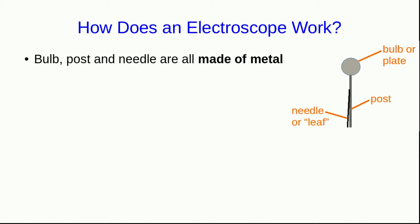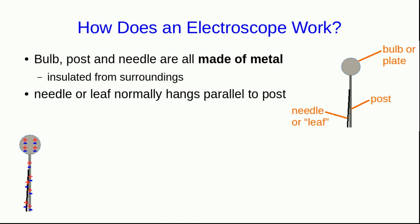All these parts are made of metal, and very importantly, they're all insulated from the surroundings. So, unless we transfer charge onto the electroscope, it will remain neutral. The needle or the leaf normally hangs parallel to the post, and by normally, I mean when the electroscope is neutral and no charges are near it.